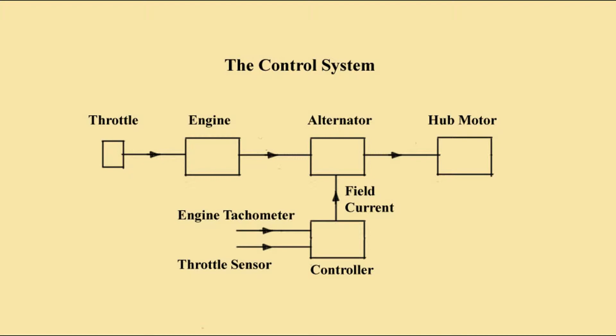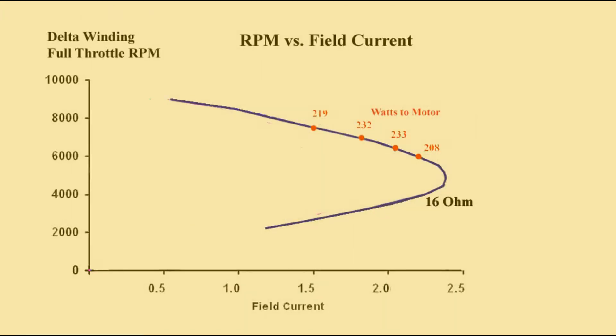The following curves show computed effects of field current on engine speed. This is full throttle with a hub impedance of 16 ohms. Maximum power is developed near 6000 RPM with little reduction above and below. Past the knee, the engine will stop unless the current is reduced rapidly.